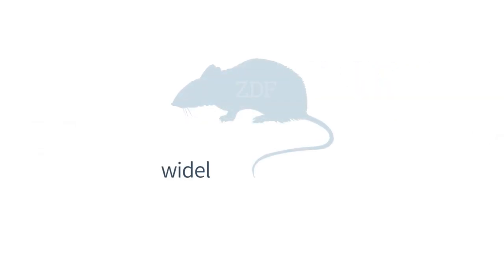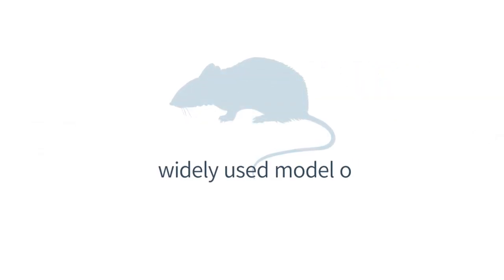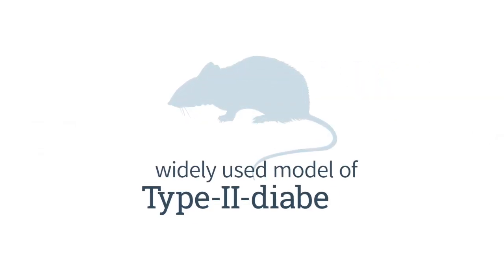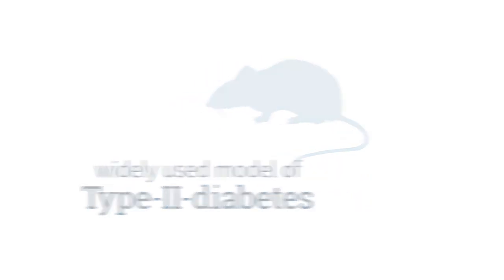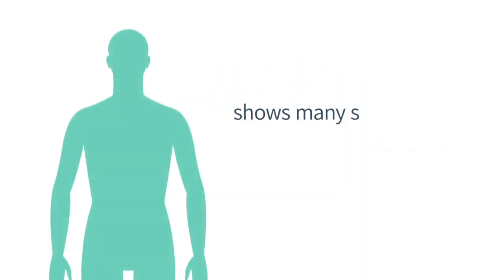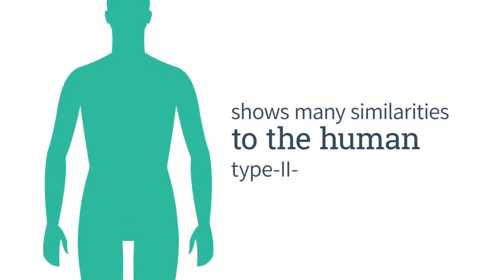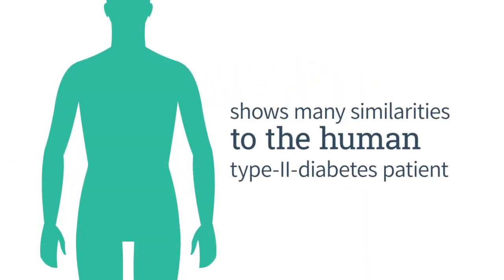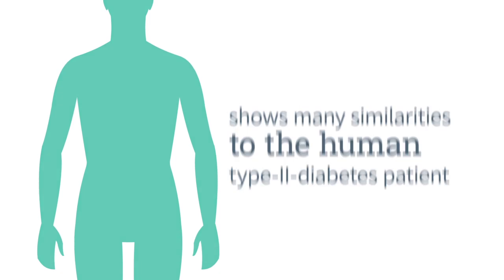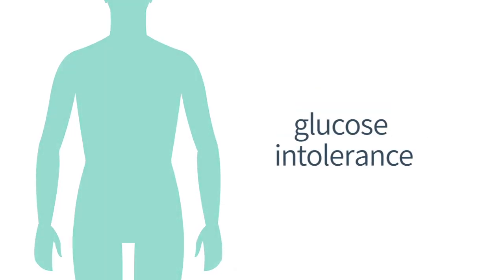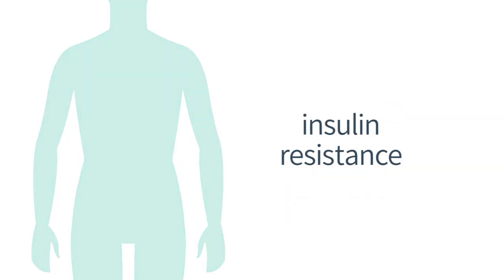The male ZDF rat is a widely used model of type 2 diabetes. It shows many similarities to the human type 2 diabetes patient in that it displays glucose intolerance and insulin resistance.